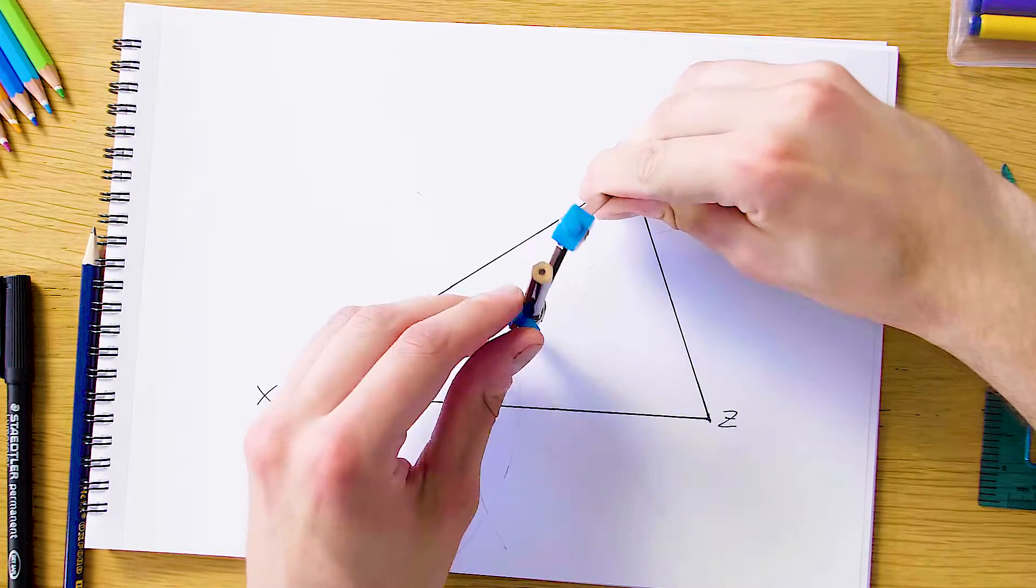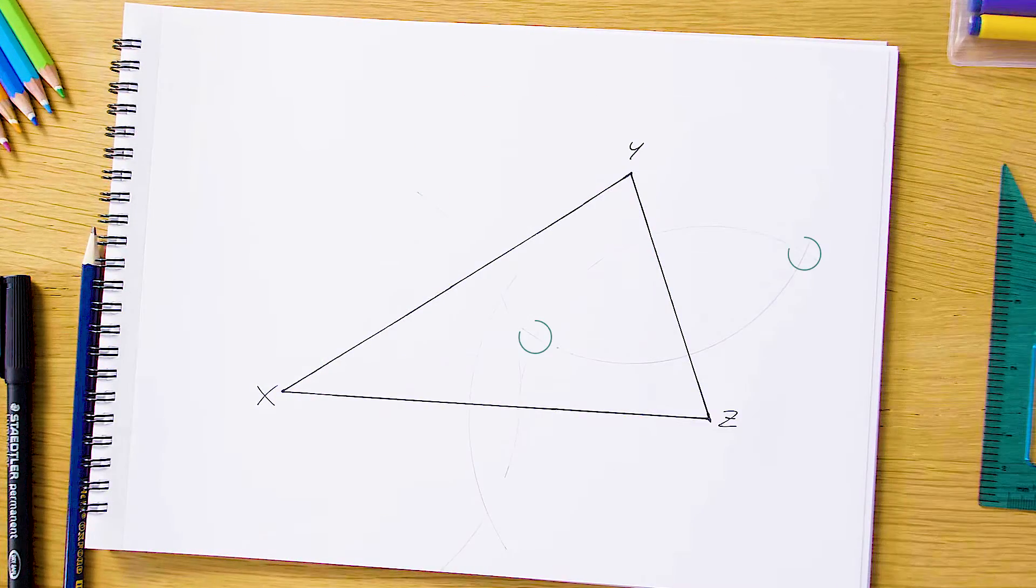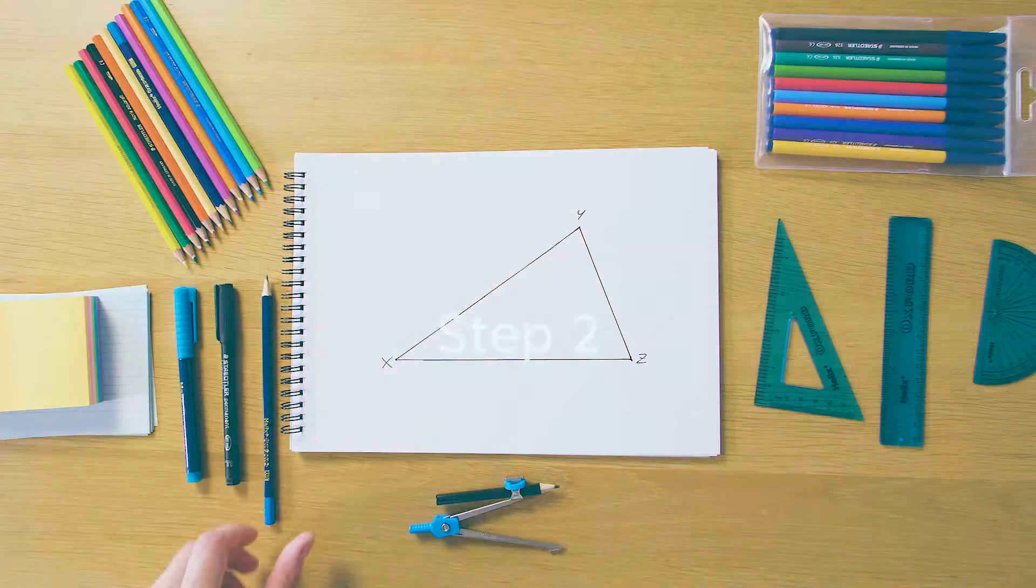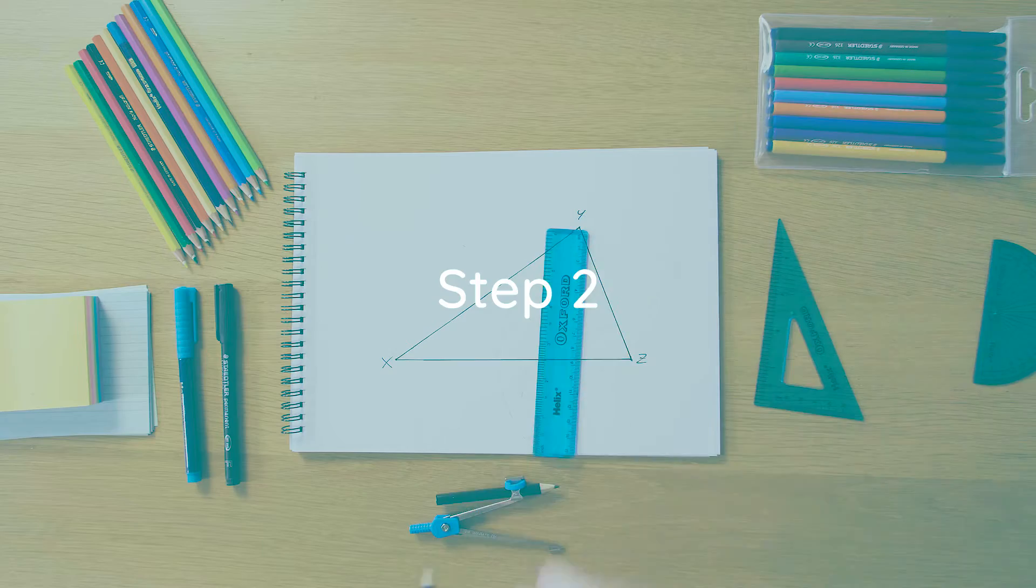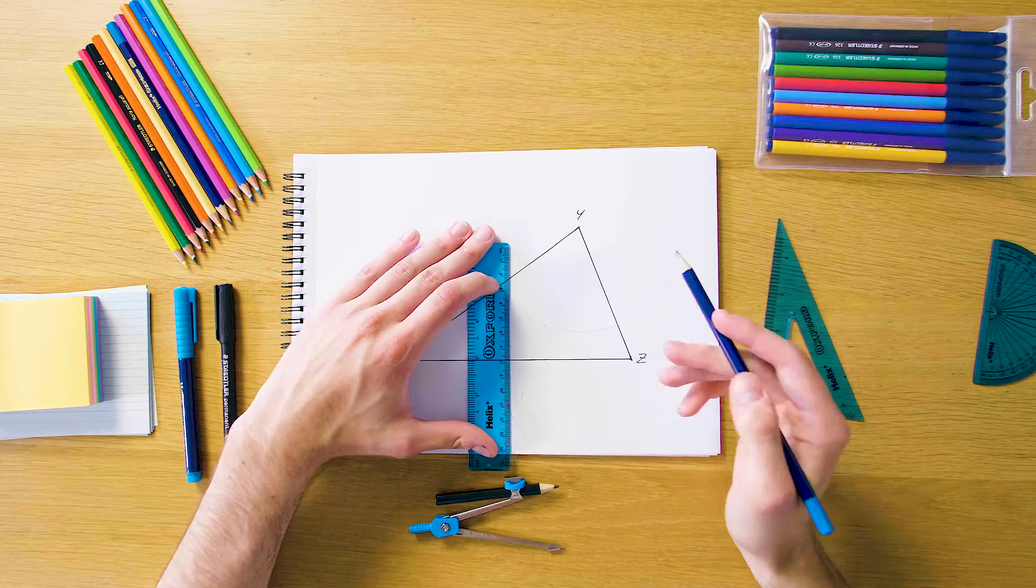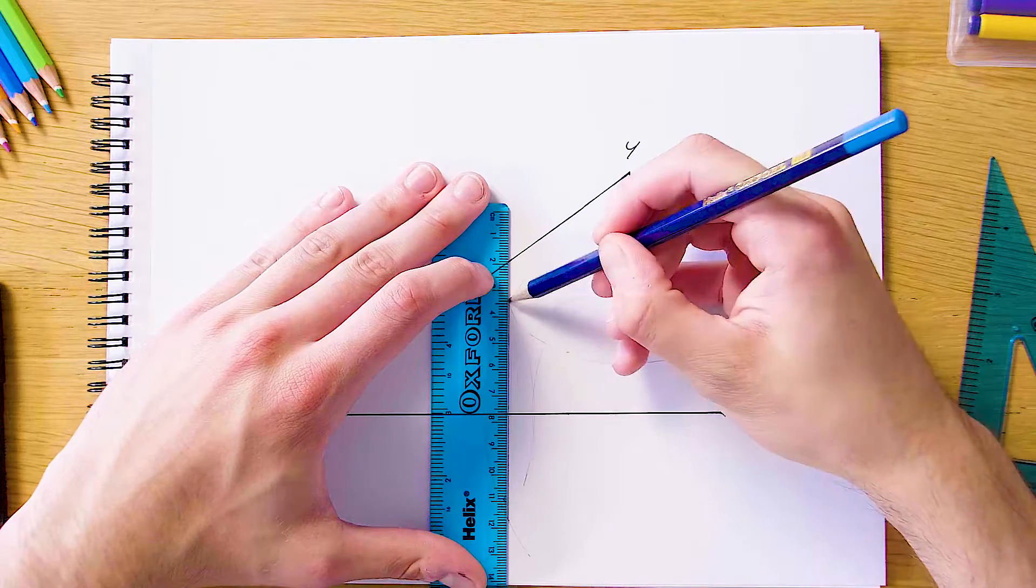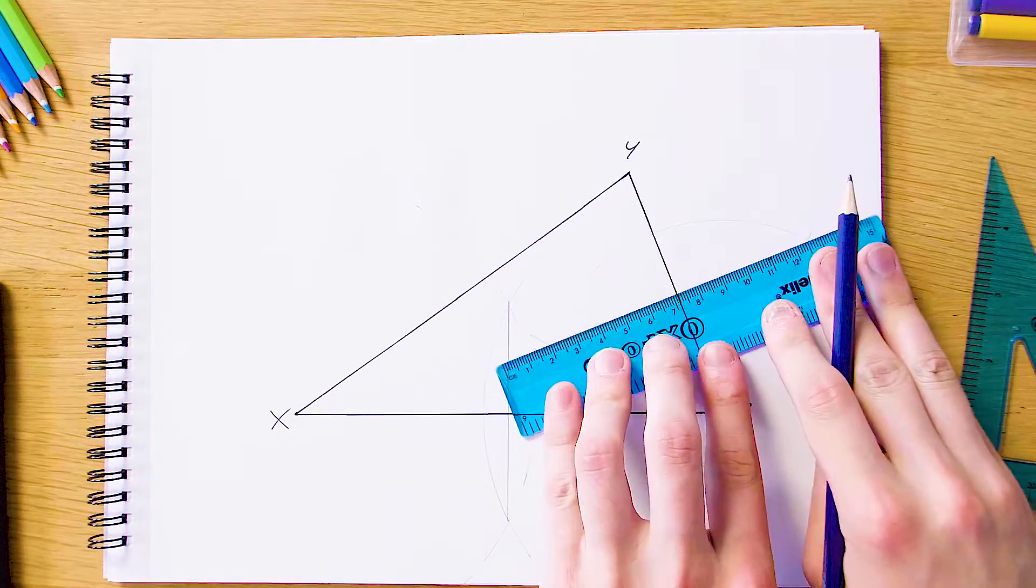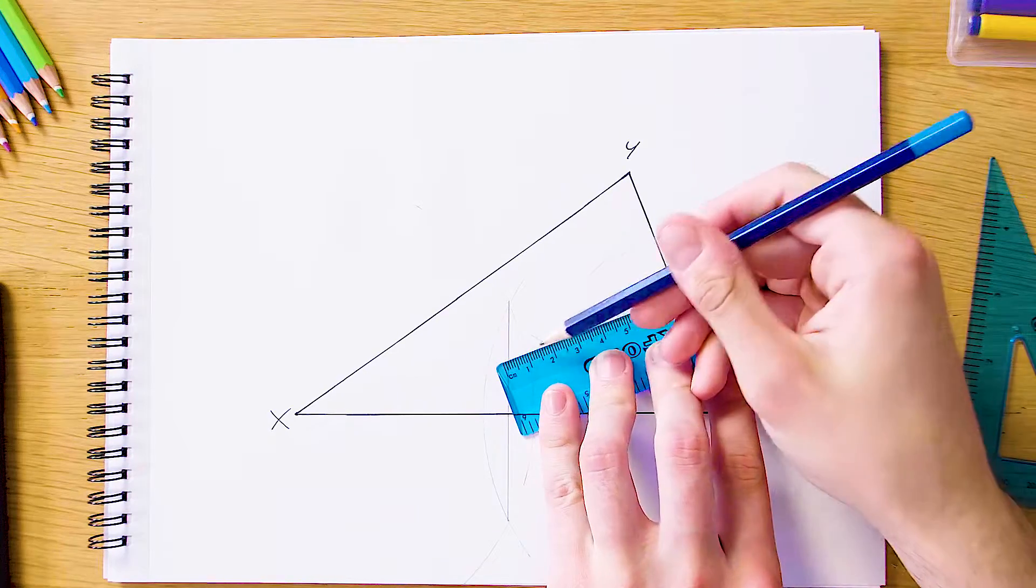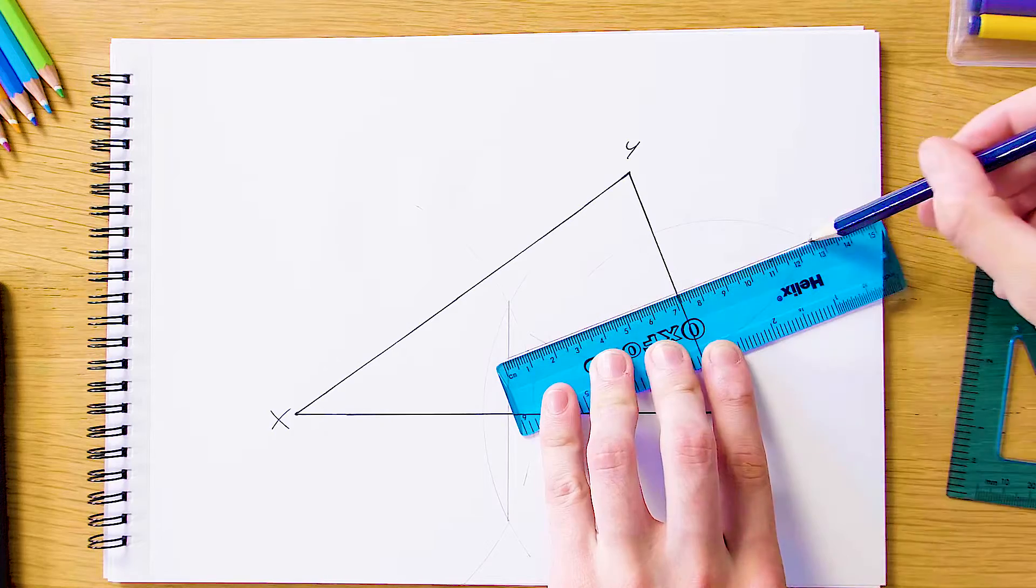Our next step is to grab our pencil and ruler and connect these two intersections that we've created with our arcs for each side. Here's our first bisector of this line. Then again for the side YZ, we're going to do the same thing—connect these two intersects to find our bisectors. Make sure these are nice and long so the examiner can see you've done this properly.